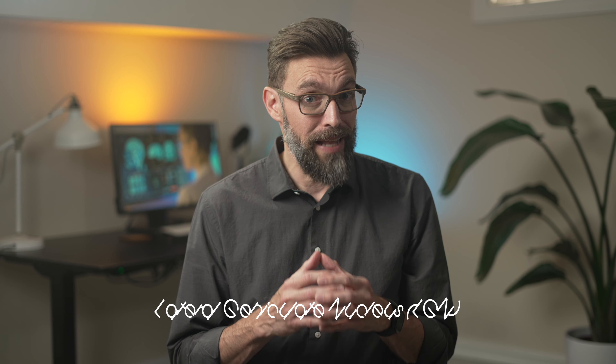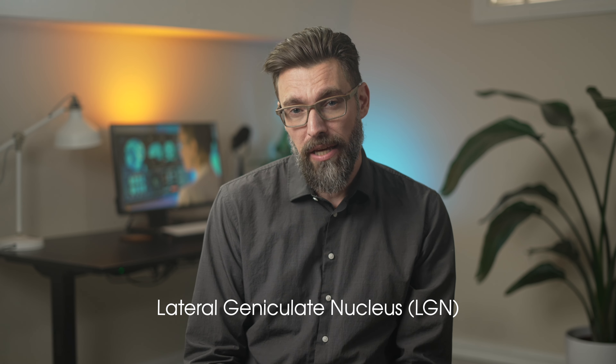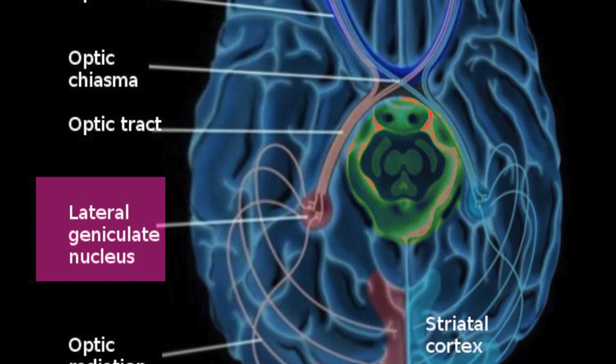Welcome back. In this video, we're visiting the lateral geniculate nucleus, or LGN, a small but crucial component of the thalamus that plays a central role in perception.